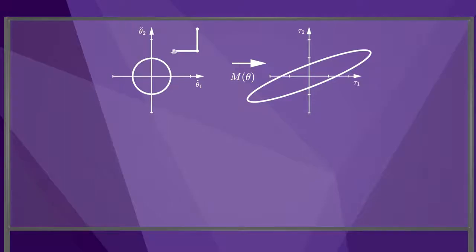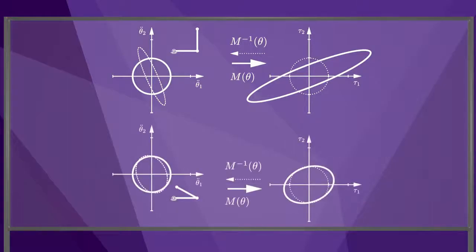If the mass matrix is invertible, then we can also map a circle of joint torques to an ellipse of joint accelerations. If we change the configuration of the robot, the shapes of these ellipses change.